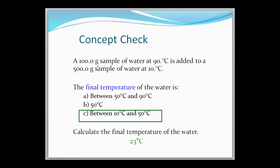On the other hand, if you had a 100 gram sample of water at 90 degrees Celsius and you had a 500 gram sample of water at 10 degrees Celsius, then you know since you have a much larger mass of water at the cooler temperature, that that temperature is going to be closer to 10 degrees Celsius, as opposed to right at 50 degrees Celsius. And we're going to go over how we would calculate that 23 degrees Celsius.